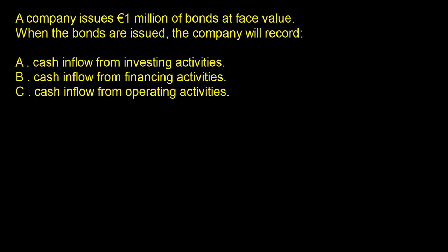Is this an operating activity? Issuing loans — getting money via loans from other people — if that's your core operations, that's called a Ponzi scheme, that's not a real business. You can help people issue loans as a bank, but if your core business is just to always get loans, that doesn't exist. So operating activities — it can't be that.